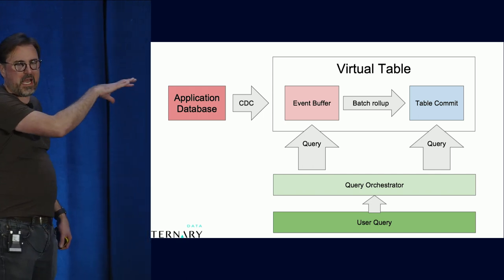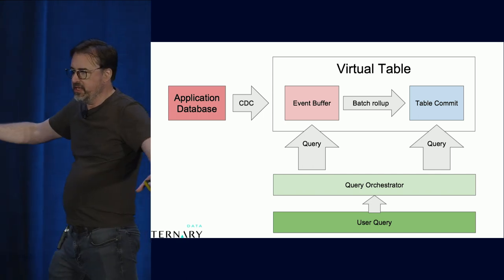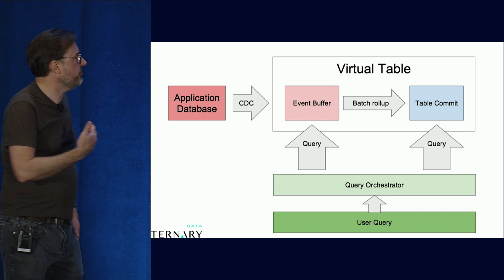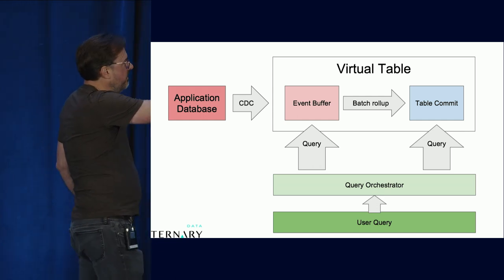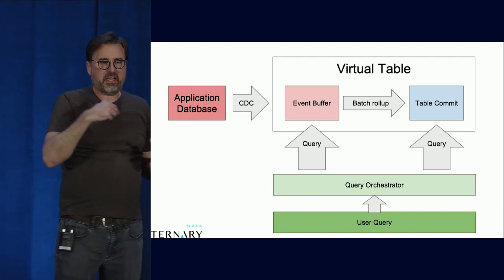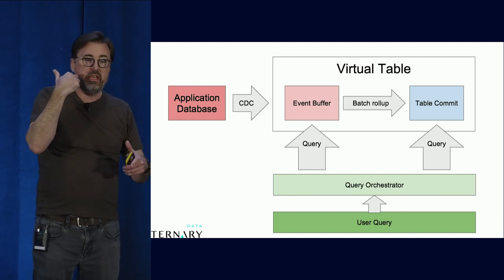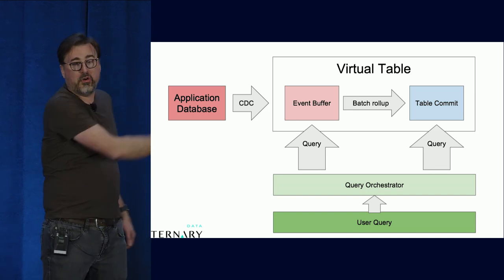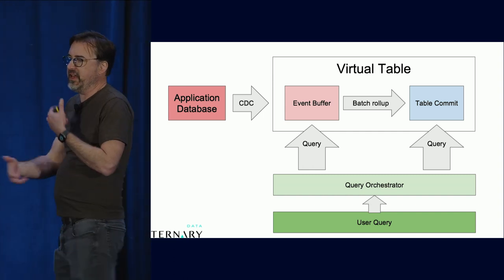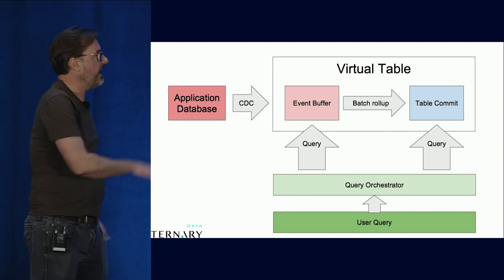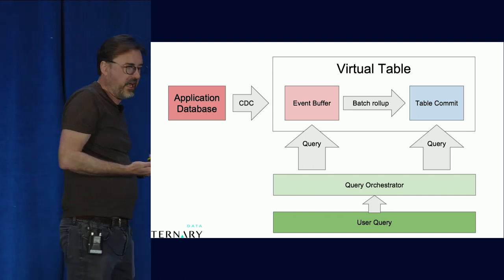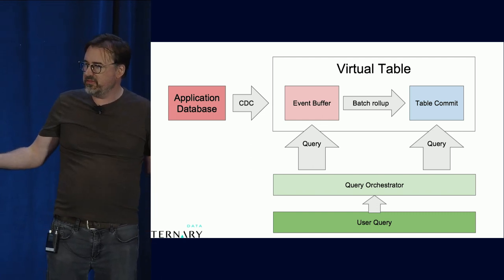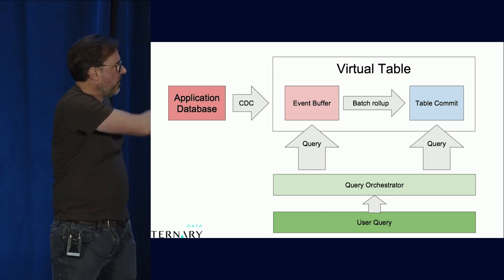Before, I was feeding my system with one application database and the data went to two paths. This is a one-path architecture that also abstracts away the complexities of querying two systems. My application database, you have change data capture running. Change data capture pulls the changes off that database. As writes happen into that database, they get detected and passed into a queue and then those go into an event buffer. The event buffer collects these events and that's my real-time part. Then I have a non-real-time part because the real-time part has scalability limitations.